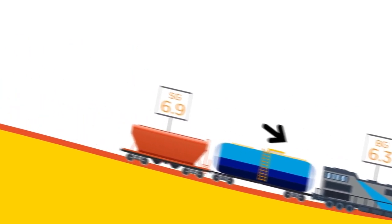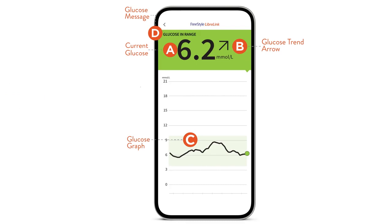This means your blood glucose level may be lower than your sensor glucose level. That's why it's so important for you to look at all four elements of a scan: the current glucose, the trend arrow, the glucose graph, and the glucose message.